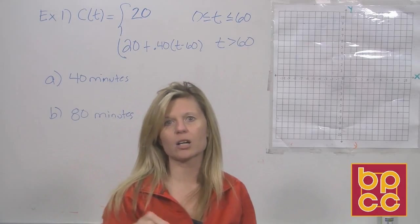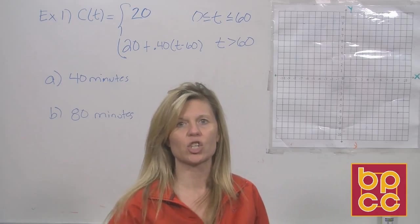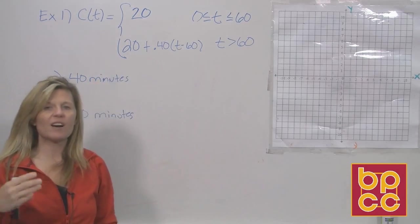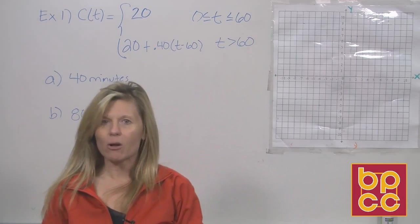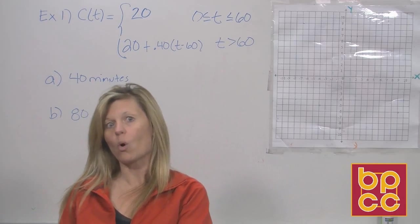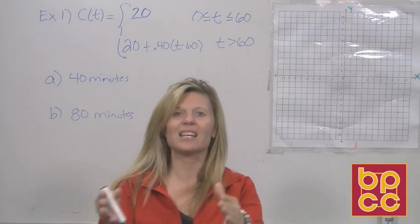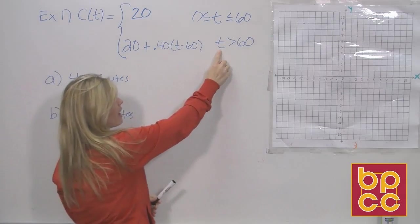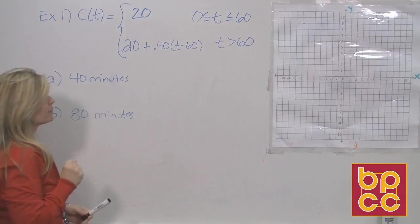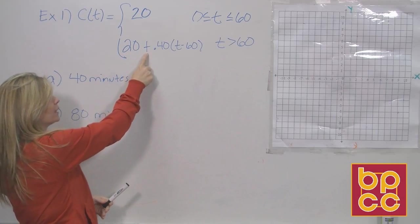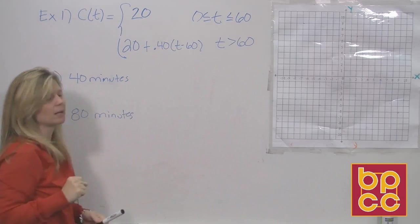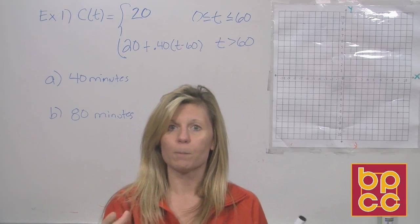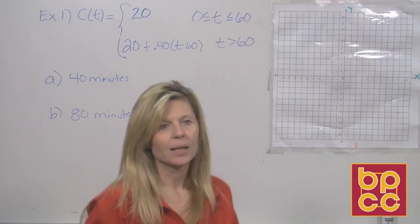But the minute I talk over 60 minutes, my cost is going to change. And that's what this bottom piece is representing here. Because if I talk 61 minutes, not only do I have to pay the flat fee of $20, I also have to pay the additional $0.40 per minute. So that's what this piece is representing. If I talk over 60 minutes that month, I would pay the $20 plus the $0.40 for the extra minutes. So if you had a cell phone in the early 90s, the programming of your bill was written in pieces like this.